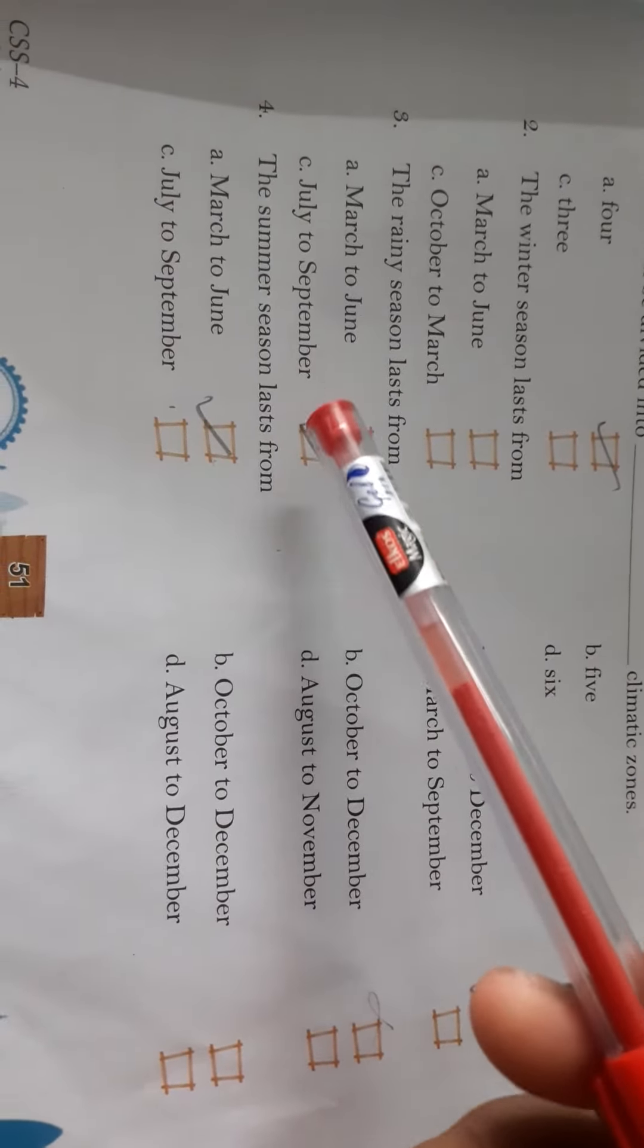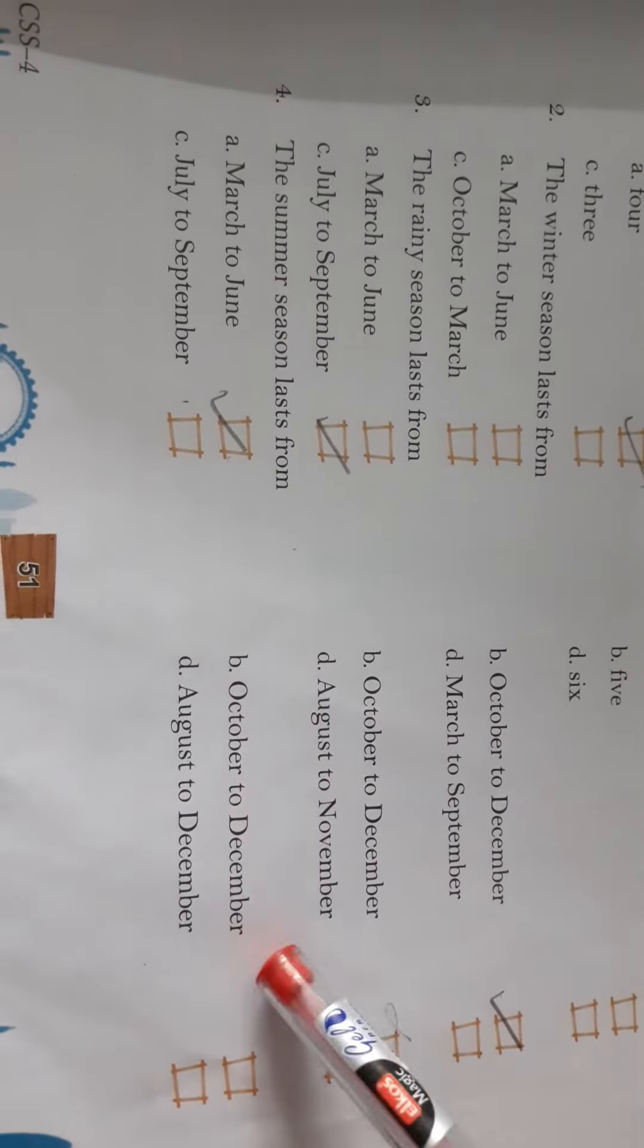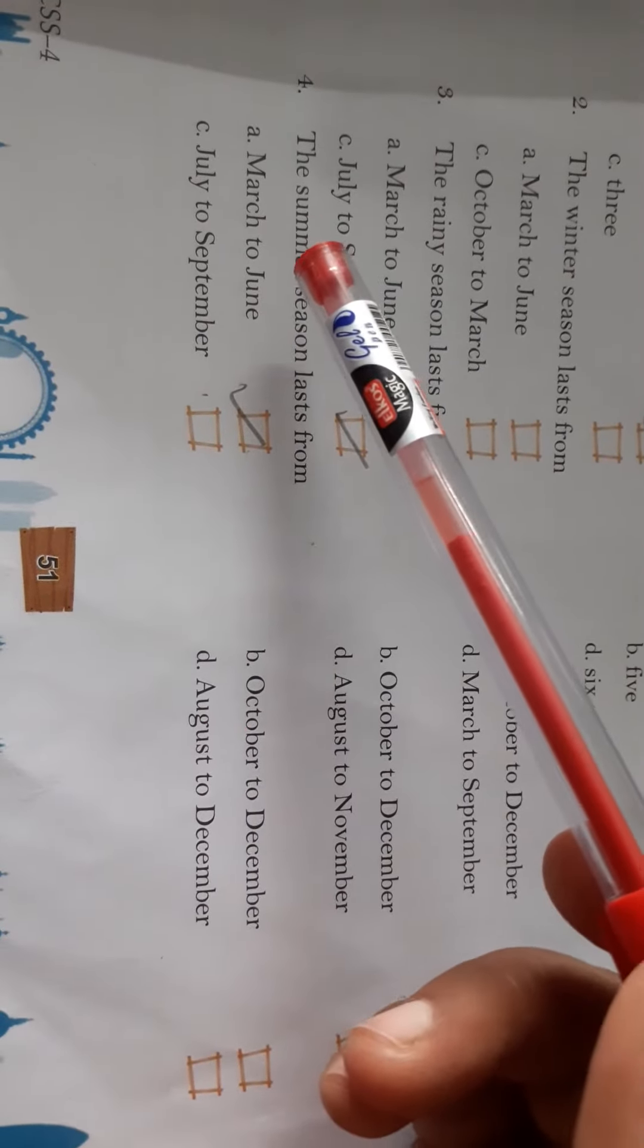The summer season lasts from March to June, October to December, July to September, August to December. क्या हो का गर्रेक्ट एंसर? March to June.